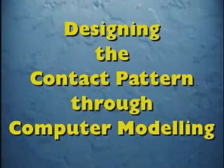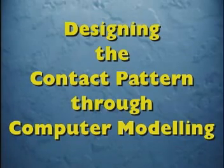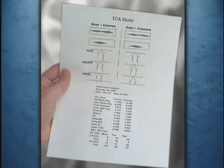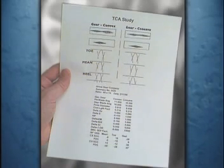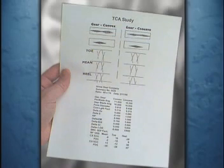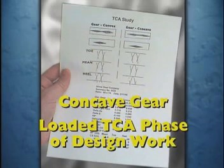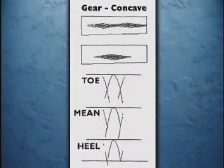In this chapter, we'll present the details involved in the process of designing the contact pattern through computer modeling and how the software integrates with the machine tools. This is a summary printout of a TCA study. This particular TCA is from the PW6000 upper tower gear set. For the purpose of illustration, we will be looking at the concave gear and addressing the loaded TCA phase of the design work, where the various displacement conditions were accounted for. Here you can see the contact pattern design that we created to meet the load requirements and the different displacements that the gear sets would encounter.